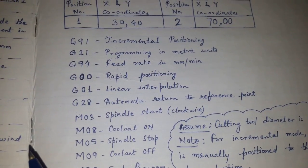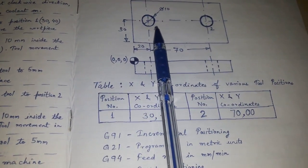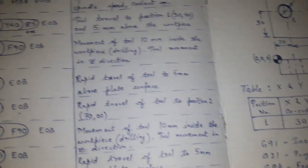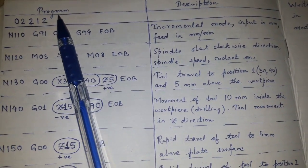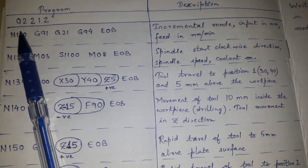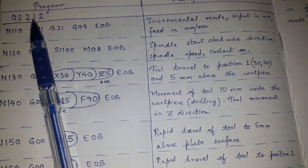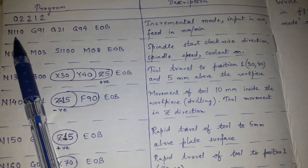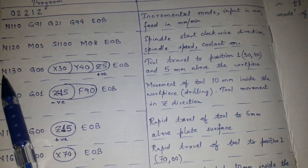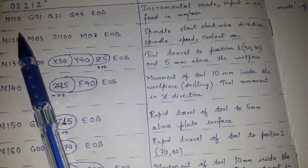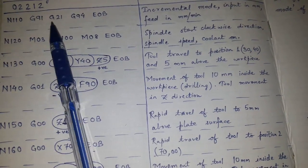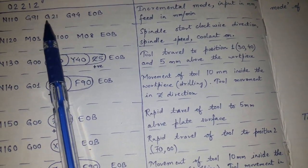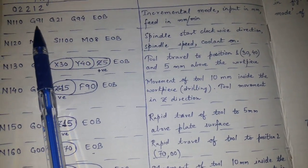The tool dimension is not given, but since the hole diameter to be drilled is 10 mm, the cutting tool diameter is taken as 10 mm. The program number is O2212, which can be retrieved later. You can assign any number. Each line has a reference number N110, N120, N130, etc. The first line is G91, G21, and G94.